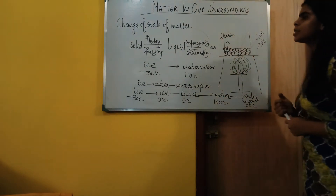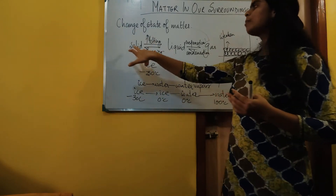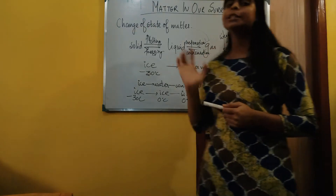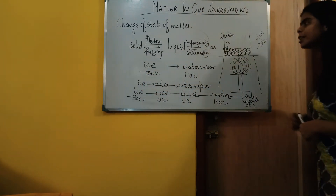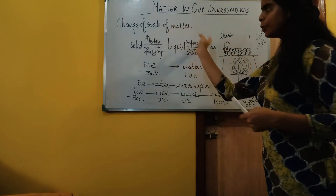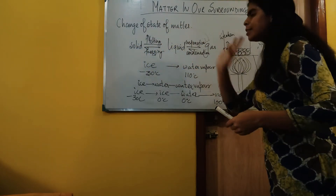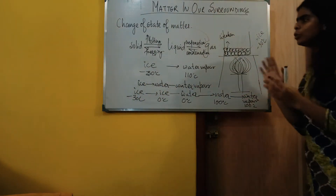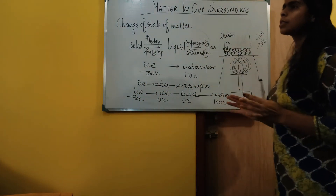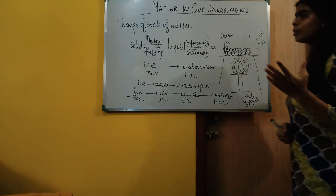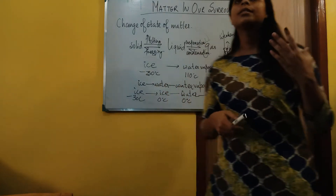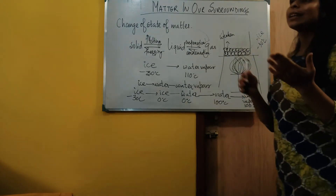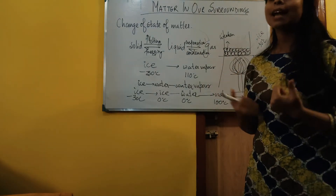What is change of states of matter? We know the three states of matter: solid, liquid, and gas. Each of these three states can be interconverted — solid can convert to liquid, liquid can convert to gas, and solid can directly convert to gas and vice versa. Today we are going to discuss in detail the mechanism behind how the particles of matter are able to bring about this change.